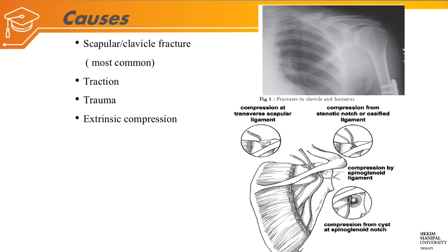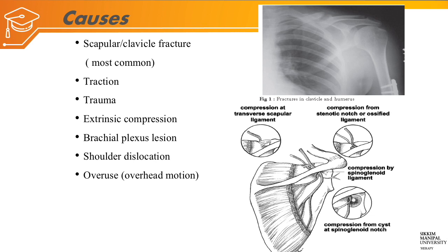Other causes include extrinsic compression, brachial plexus lesion, shoulder dislocation, overuse such as overhead arm activity, ganglionic cyst compression, tumor compression, compression at the transverse scapular ligament, and compression at the spinoglenoid notch by any kind of cyst.